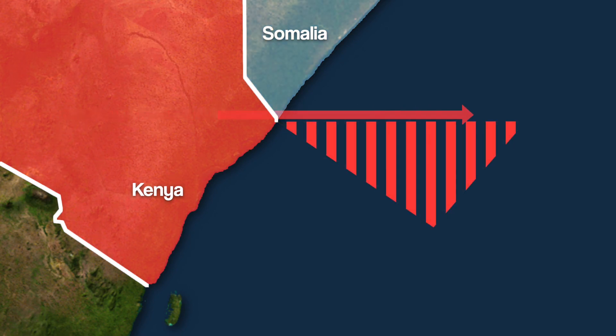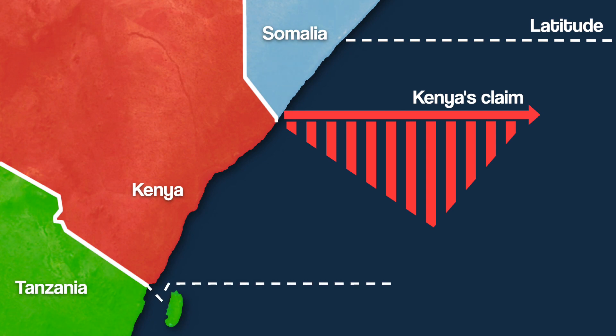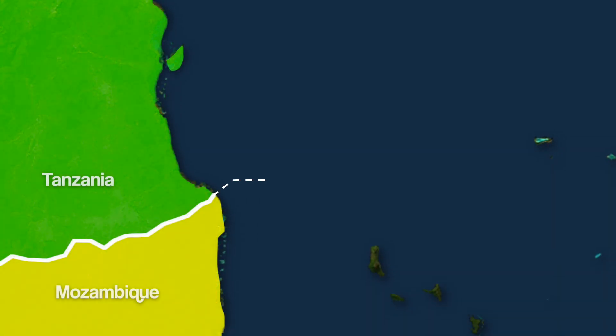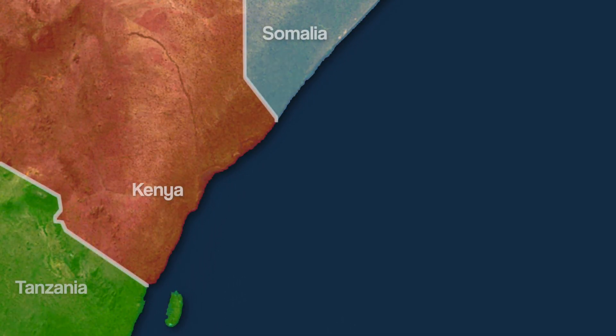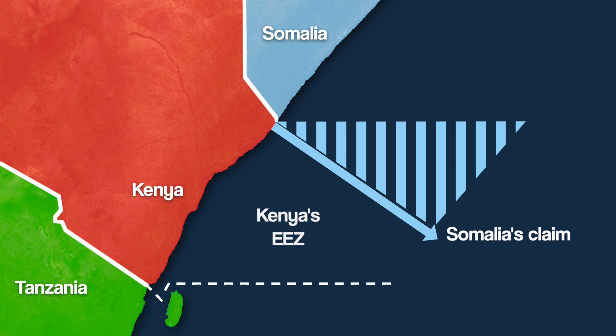Kenya is claiming that the boundary between EEZs should be straight — that is, parallel with the line of latitude. At first this seems kind of arbitrary, but if you look at the maritime boundary of Kenya and Tanzania, you can see why they have claimed in this way. Even Tanzania and Mozambique follow a similar direction. Because of the boundary with Tanzania, if Somalia's claim is upheld, it would reduce Kenya's exclusive economic zone quite significantly.